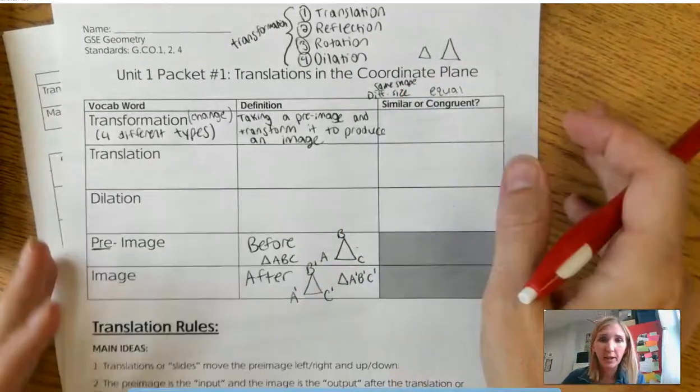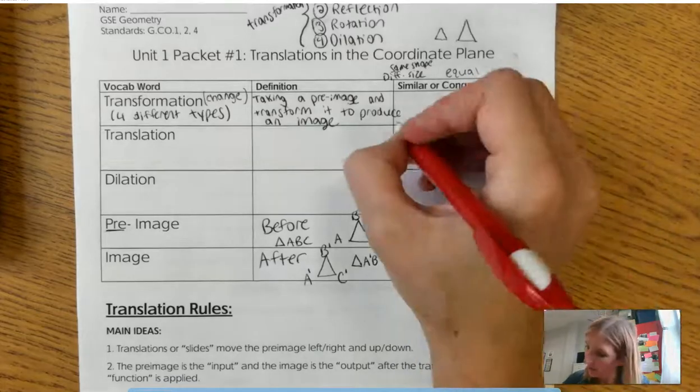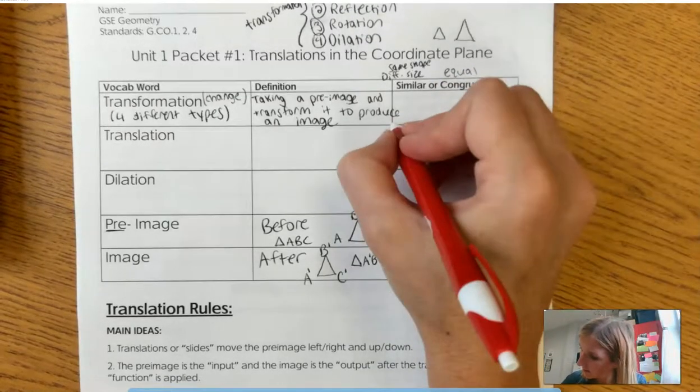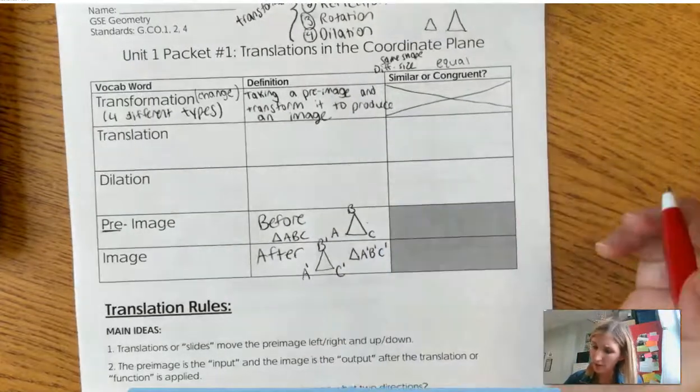Similar means same shape, different size. Y'all thought you would get away from my bad handwriting? Well, nope. Alright. Okay, so that doesn't make any sense for this one. We're going to use it for these two right here, okay?